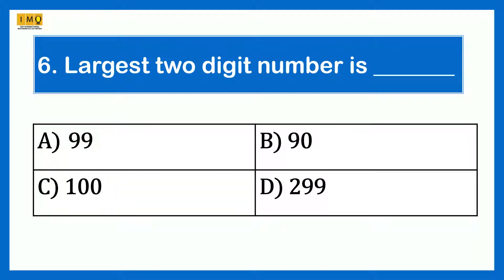Largest 2-digit number is: Option A 99, Option B 90, Option C 100, Option D 299. Answer is Option A 99. 99 is the largest 2-digit number. 90 is a 2-digit number but it is smaller than 99. Option C 100 and Option D 299 are 3-digit numbers.